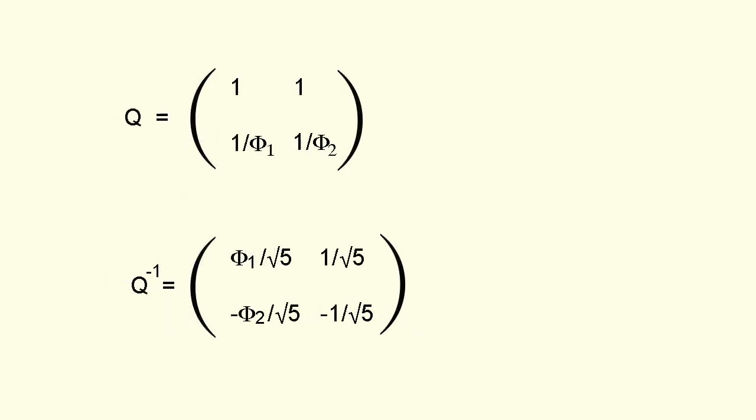The next step is to find the matrix q and its inverse q to the minus 1. I'm not going to do that here because this is the first video we've done that involves linear algebra and I don't want to push too far ahead of what you might be familiar with. I'm simply going to state that if phi 1 equals 1 plus root 5 over 2 and phi 2 equals 1 minus root 5 over 2 then although q can take many forms we'll choose this one because it's convenient. From this it follows that the inverse of q is